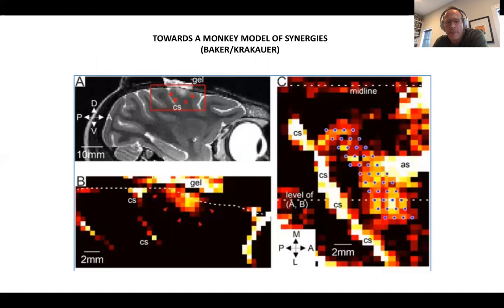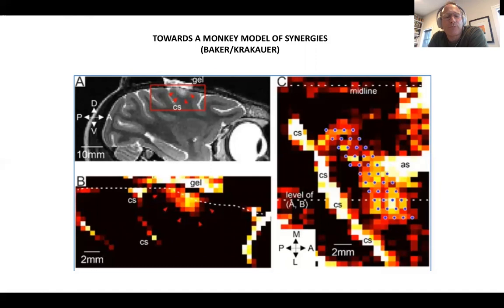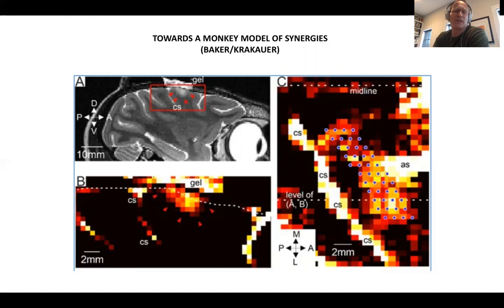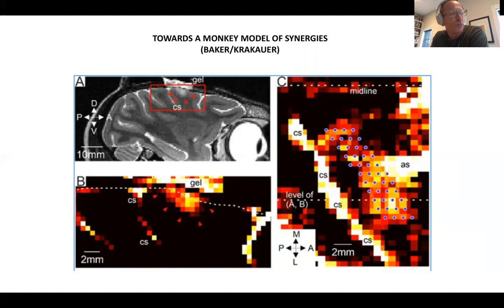We don't really know much about the biology of these positive and negative symptoms. This is preliminary data being generated in collaboration with Stuart Baker at the University of Newcastle in England, where we're beginning to try and develop a monkey model of synergies. These were not seen in the classic pyramidal tract models of stroke in the mid-20th century, so the idea was that perhaps we need concomitant cortical lesions to get a better sense of what's happening to generate synergies. We badly need an animal model — it's going to have to be a non-human primate model — to investigate these positive symptoms, because they're very important for human stroke, yet we haven't seen them in mouse models nor in classical non-human primate models.